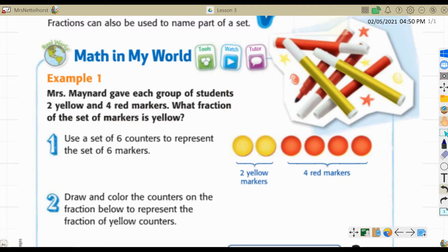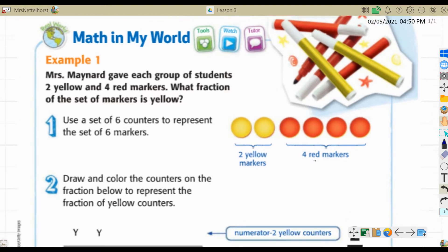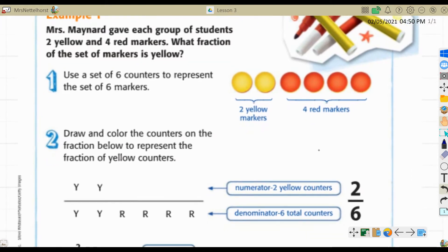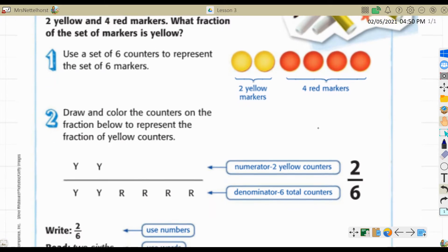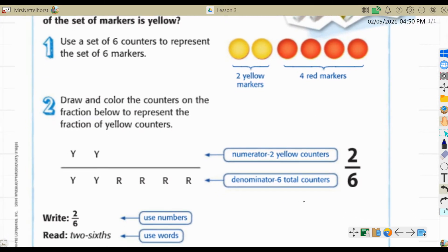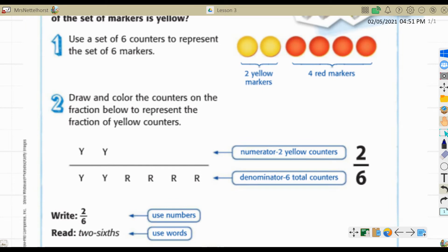Mrs. Maynard gave each group of students two yellow and four red markers. What fraction of the set of markers is yellow? You can see the markers there in the picture, and we used counters to represent the six markers. So I've got two yellow markers and four red markers. We're going to draw and color the counters on the fraction line below to represent the fraction of yellow counters.